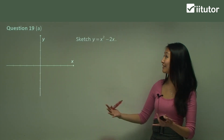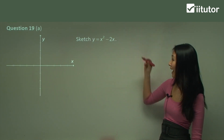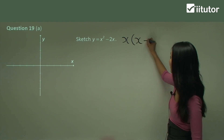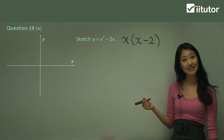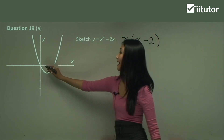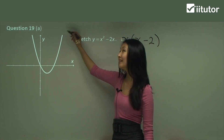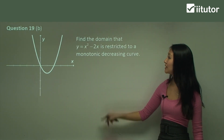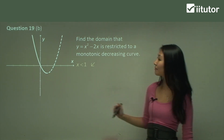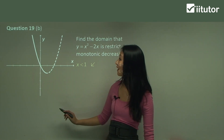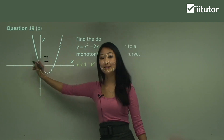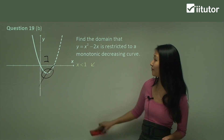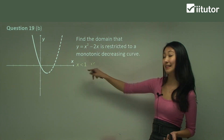In question 19 we want to sketch y equals x squared minus 2x. Factorizing gives x(x minus 2), so the x-intercepts are at 0 and 2. We draw that as a basic parabola. Now let's find the domain when it's restricted to monotonic decreasing. Monotonic decreasing is the portion where the gradient is always negative, and you can see that's going to be when x is less than 1. We don't include that point because it's a stationary point — neither increasing nor decreasing. So it's monotonic decreasing for x less than 1.